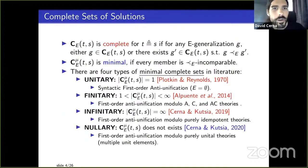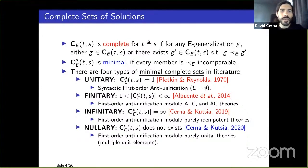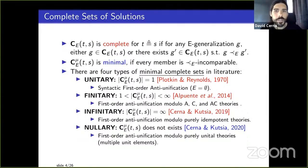When there's more than one solution, we define a complete set of solutions: a set such that for any solution to the anti-unification problem, there exists something in that complete set that is less general than that other solution. The minimal complete set is the same except every member is incomparable under the ordering with respect to the equational theory.